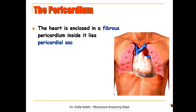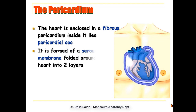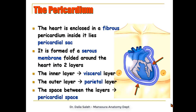The heart is wrapped or enclosed in multiple layers called the pericardial layers. First, it is enclosed in an outer fibrous layer called the fibrous pericardium. Within it lies the pericardial sac, formed of a serous membrane folded around the heart into two layers. The inner layer is called the visceral layer, close to the surface of the heart, and the outer layer is called the parietal layer, which lines the fibrous pericardium. The space between these two layers is called the pericardial space.